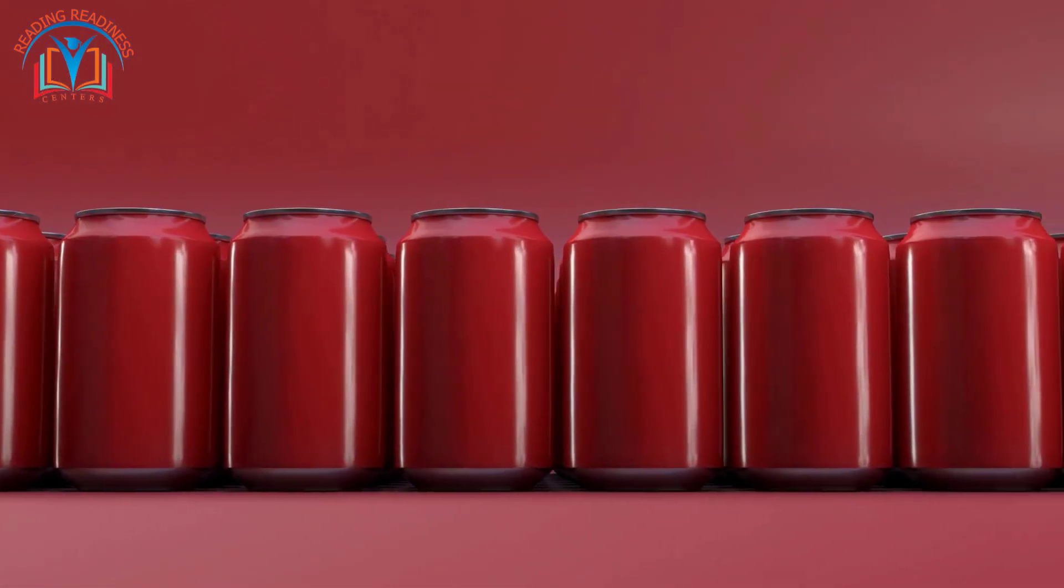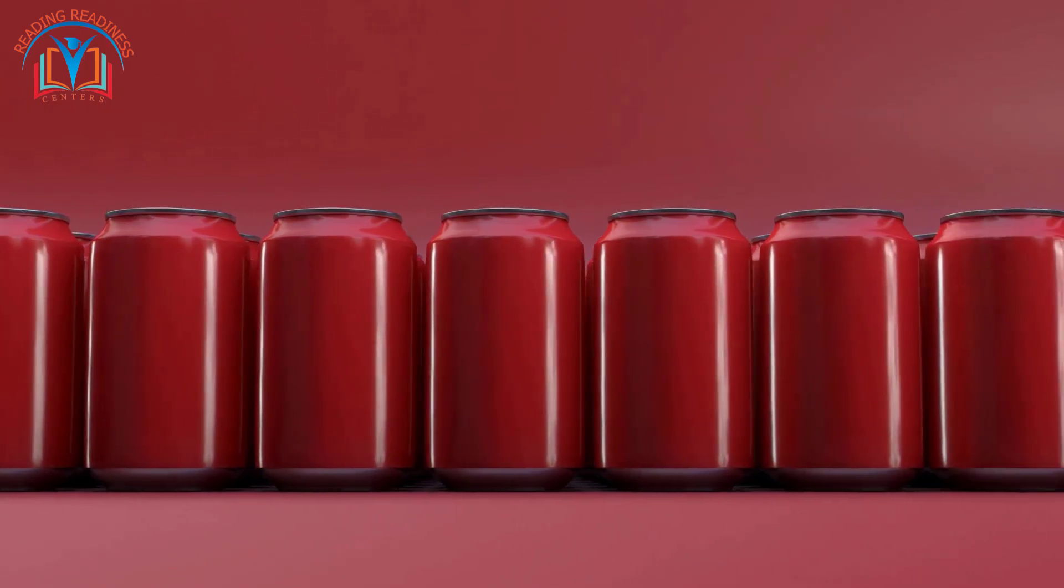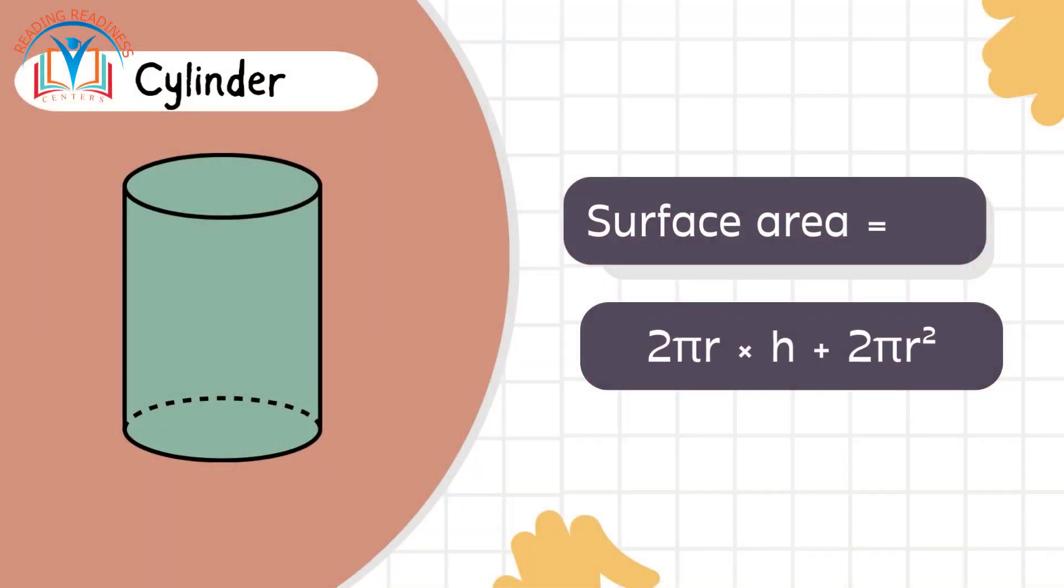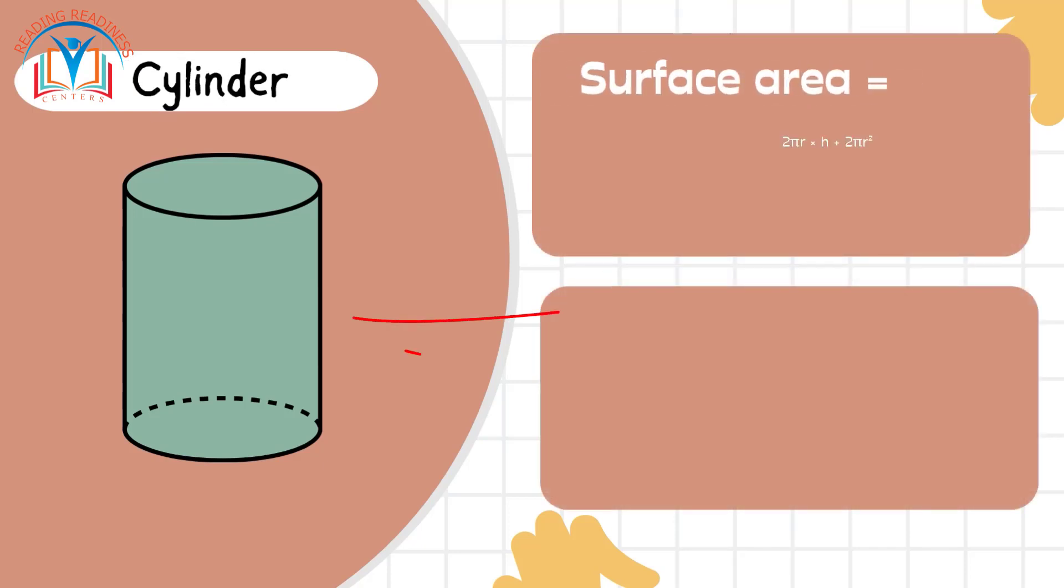Cylinders. The curved surface is like a label around a soup can. Surface area. Imagine measuring that shiny can.